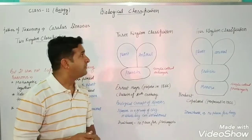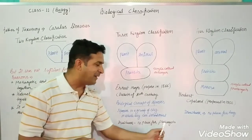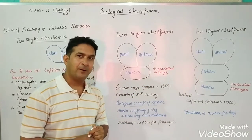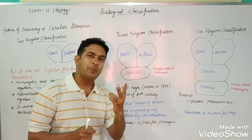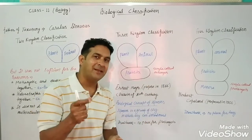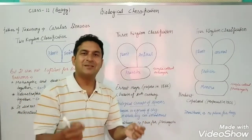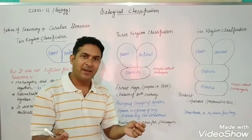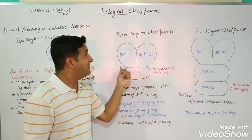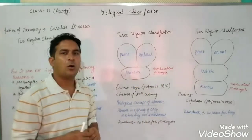The drawback of the three kingdom classification is that it did not give a place to single-celled prokaryotic organisms. The Protista kingdom contained single-celled eukaryotes, plants are eukaryotes, and animals are eukaryotes — so the three kingdom classification focused entirely on eukaryotes, leaving no place for prokaryotic organisms like bacteria.